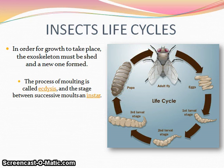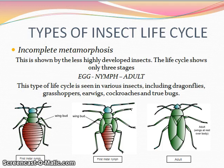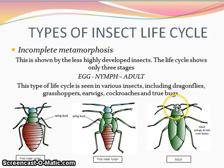Types of insect life cycle. There are two different types. In incomplete metamorphosis, shown by the less highly developed insects, the life cycle shows only three stages: egg, nymph, and adult. The nymph resembles a miniature adult but is not able to reproduce. This life cycle has the disadvantage that both nymph and adult often share the same food source. The advantage is that the vulnerable pupal stage is avoided.